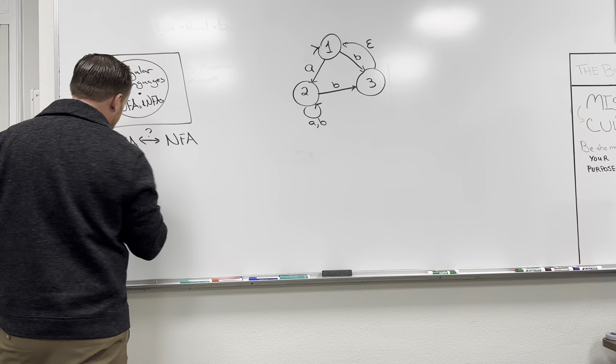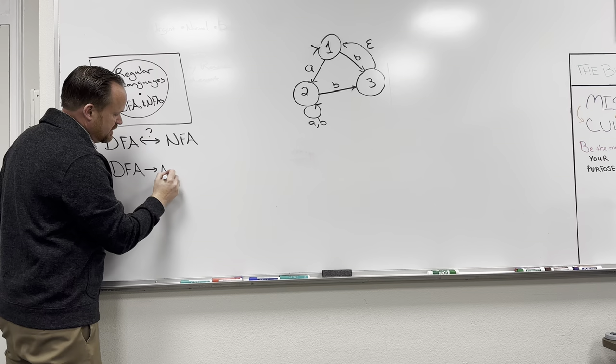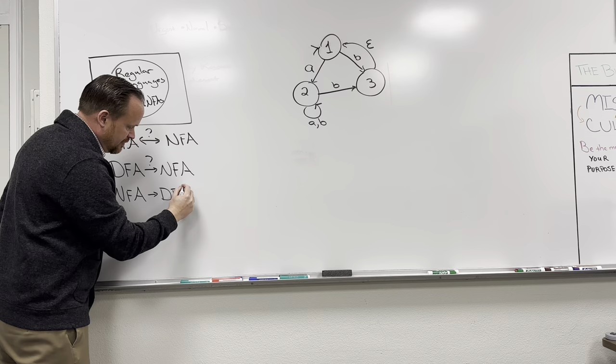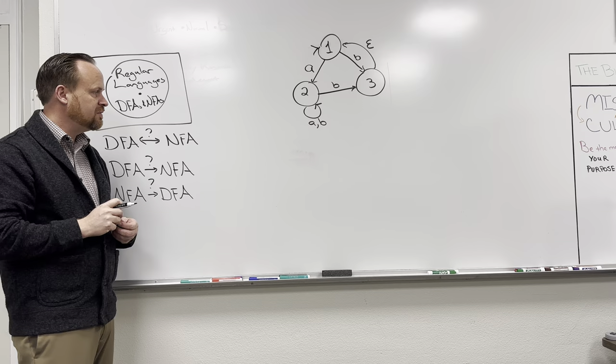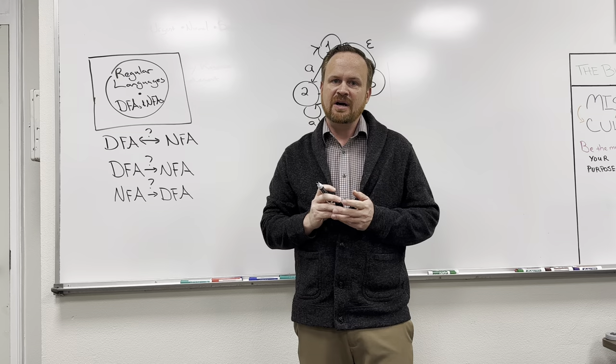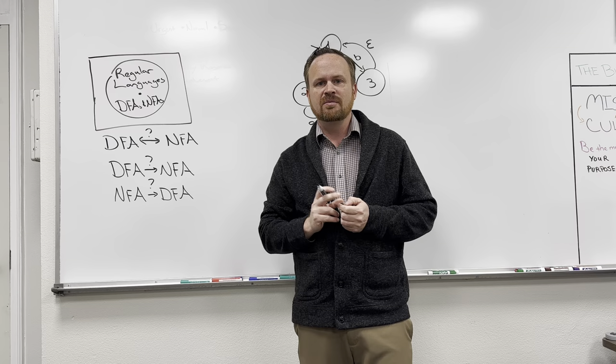Our proof has two parts, one for each direction. First, we'll prove that for every DFA there is an equivalent NFA. Then we'll show that for every NFA there is an equivalent DFA. Once we prove both directions, we'll know the two are equivalent. The first proof is essentially a proof by definition — we're going to show that every DFA is already an NFA.